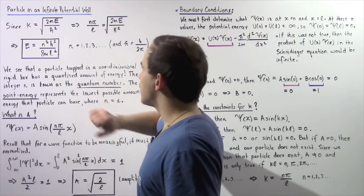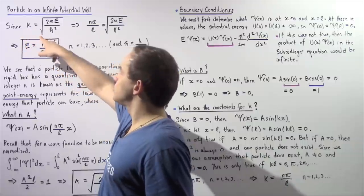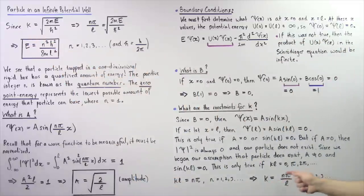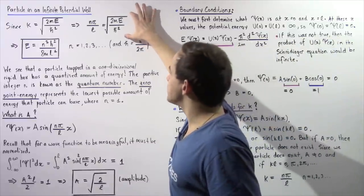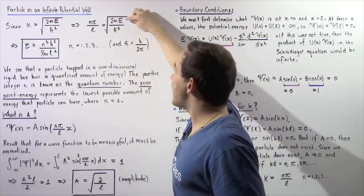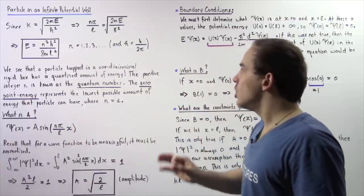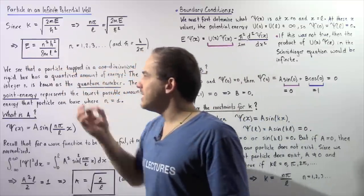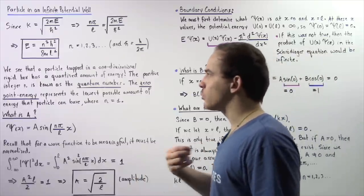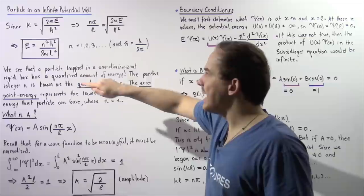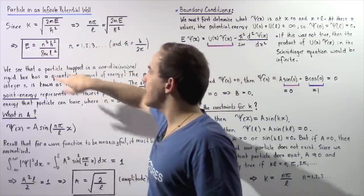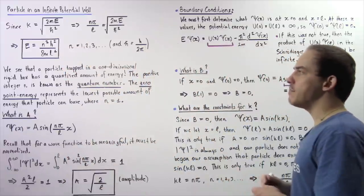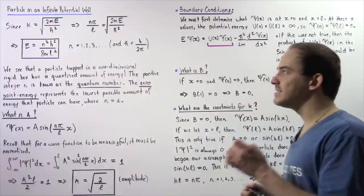The energy E of the particle inside the one-dimensional rigid box is: E_n = n²h²/(8mL²), where h is Planck's constant, m is the mass of the particle, L is the width of the box, and n is a positive integer quantum number.